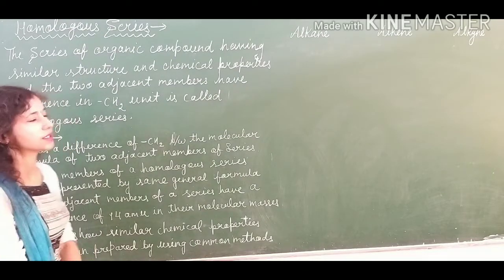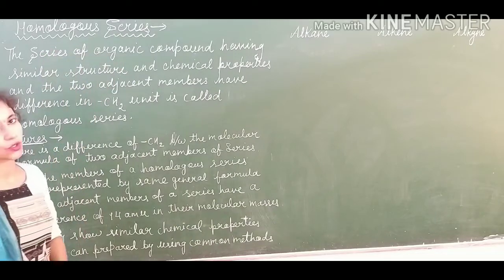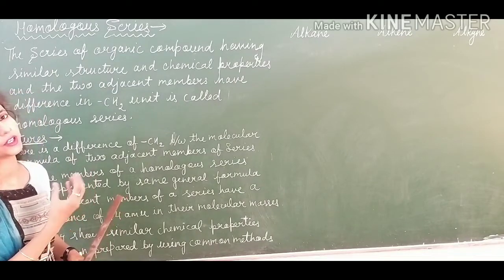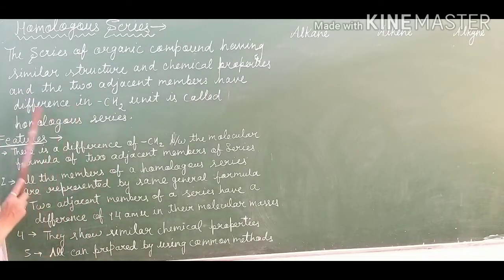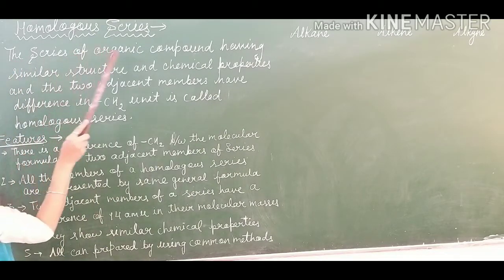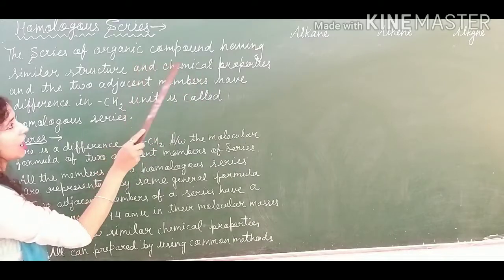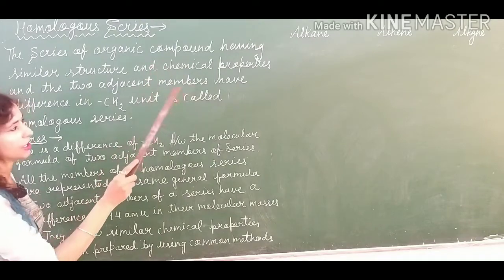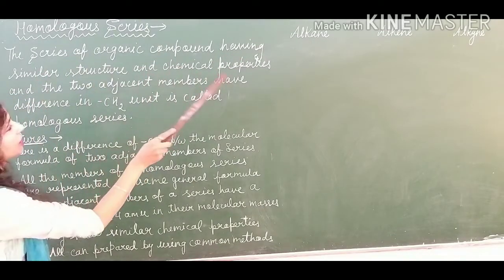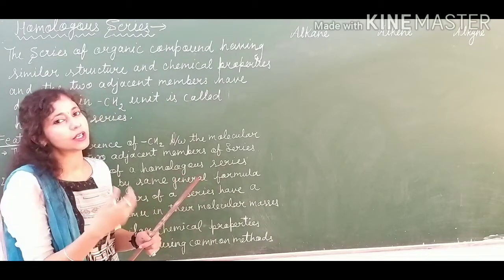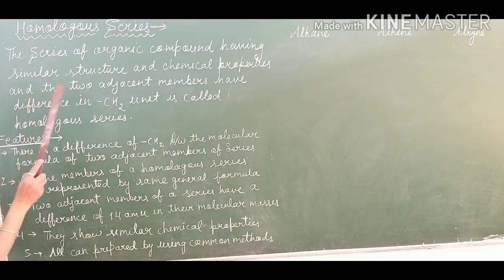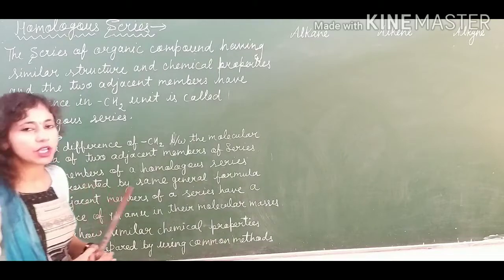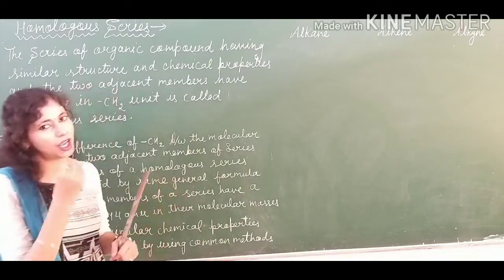In today's session, we are going to start the study of the Homologous Series. So first of all, we have to focus on what features and characteristics I have written about the Homologous Series. The first characteristic is: it is a series of organic compounds — organic compounds means they are having carbon atoms, hydrogen, and other elements can be present — having similar structure and chemical properties. Two adjacent members are different by a CH2 unit — this is called the Homologous Series.